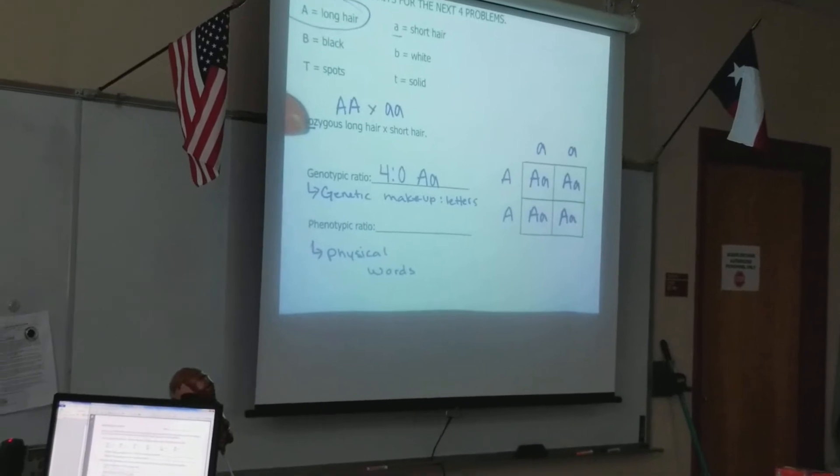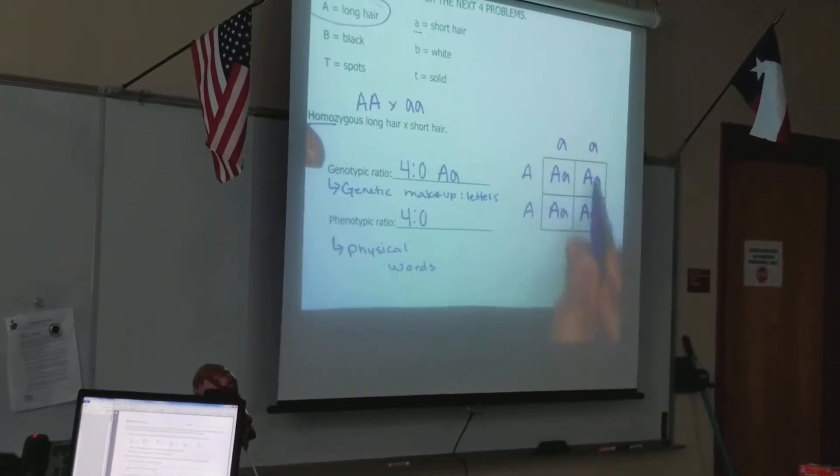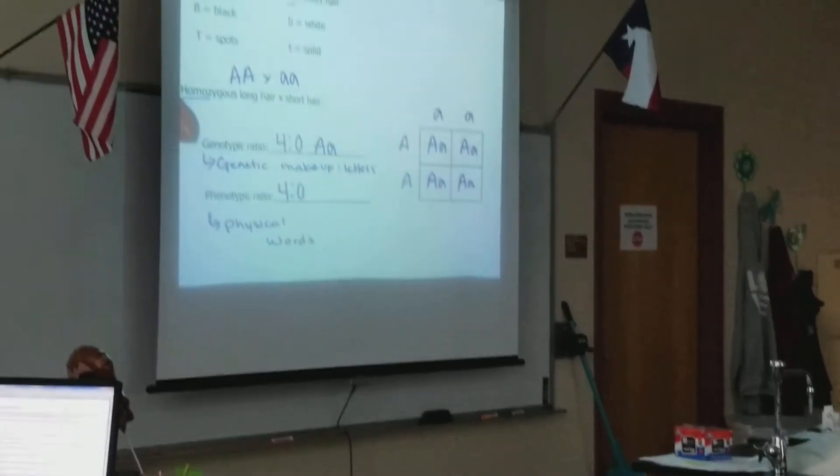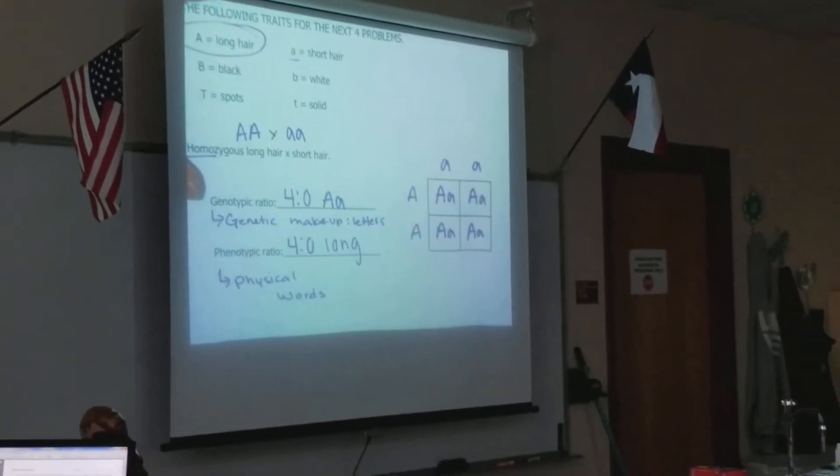In phenotypes, we are going to write, we're going to have four out of zero because every single square has one dominant allele. And these are all going to be what? Long or short? Long. Long. Easy enough? Yes. Okay, good.